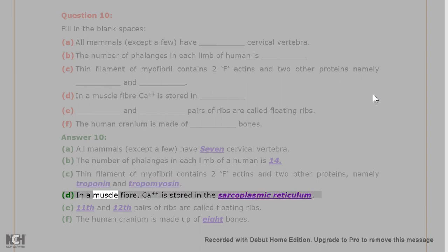D. In a muscle fiber, Ca++ is stored in the sarcoplasmic reticulum. E. Eleventh and twelfth pairs of ribs are called floating ribs. F. The human cranium is made up of eight bones.